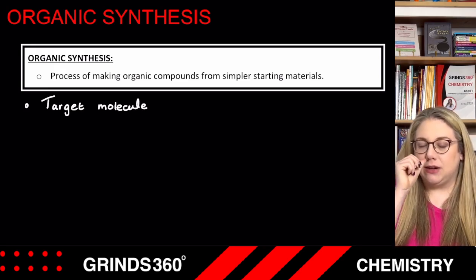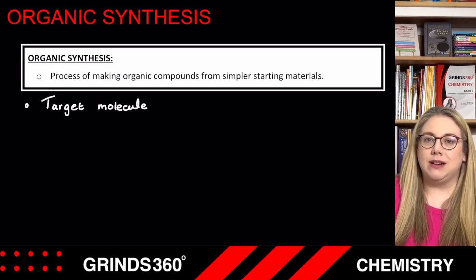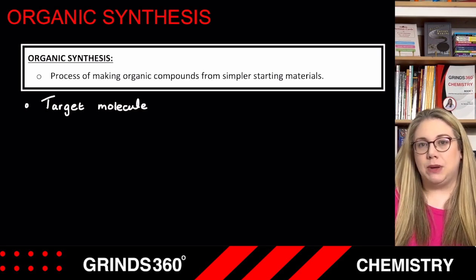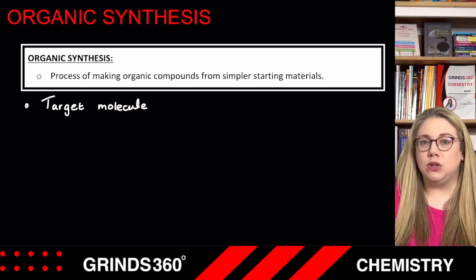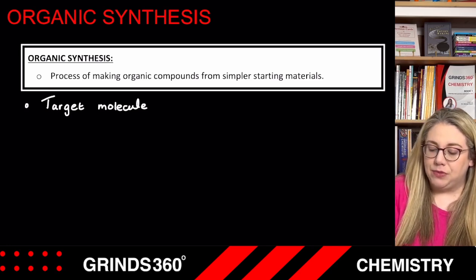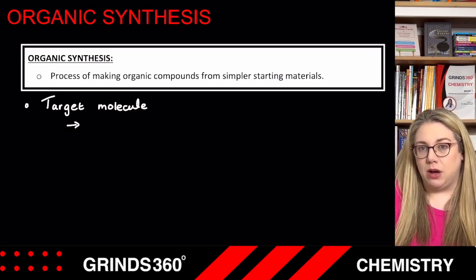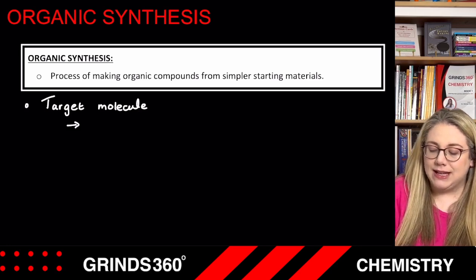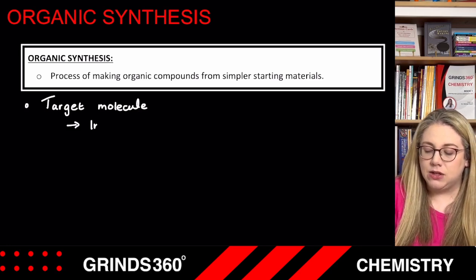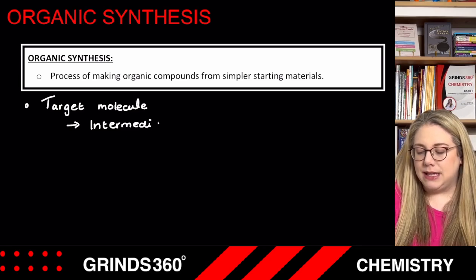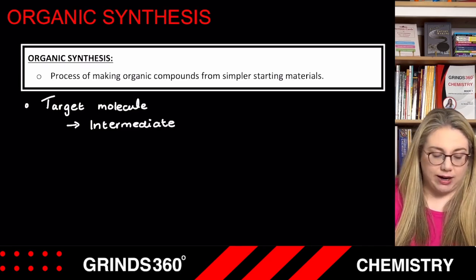When a scientist or chemical engineer is making a target molecule, usually it can't be done in one step — it usually has to be done with a series of steps. They figure out a way to the target molecule via a series of intermediates. These intermediate compounds are the compounds that you form on the way to the target molecule.